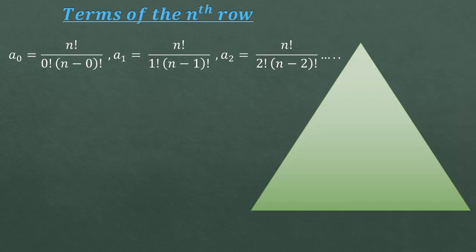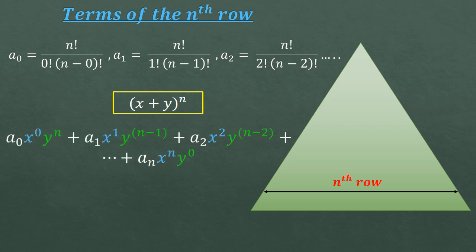Now we have the terms of nth row, right? So as we calculated x plus y to the power 4 using the fourth row of this triangle, can we calculate x plus y to the power n using the nth row of this triangle? So the expression will be something like this. Similarly, as we wrote earlier, just write the terms, multiply with increasing powers of x and decreasing powers of y. And that's it. Add the terms, you get the expression.